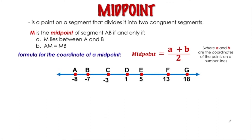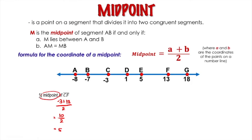Let's use the same number line. For the first one, we are to get the midpoint of segment CF. Get the coordinate of C, which is negative 3, add it to the coordinate of F, which is 13, and then divide by 2. This gives us 10 over 2, which is simply 5. Since you are asked to get the midpoint, you have to find the point at coordinate 5, which from the number line is point E. So therefore, the midpoint of segment CF is point E.